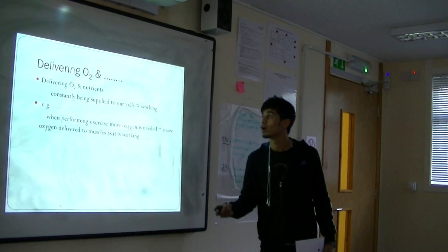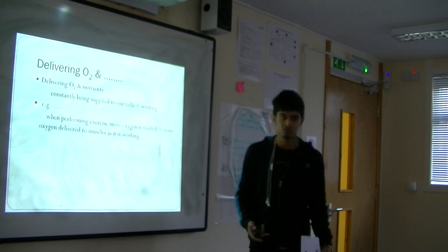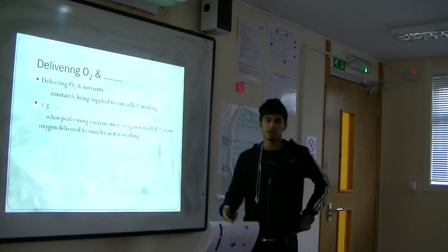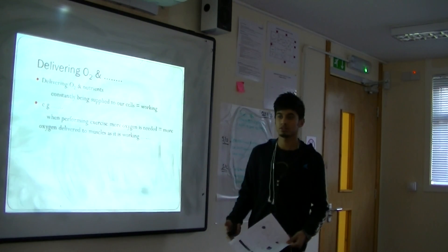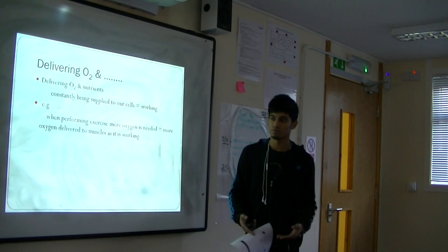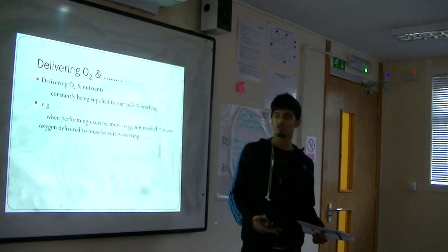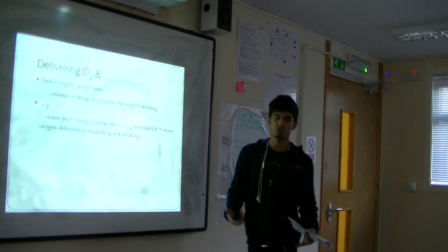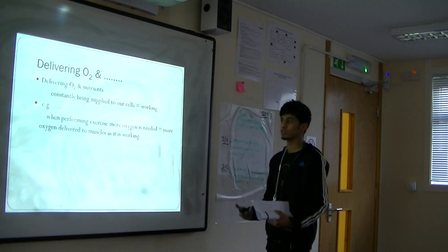Delivering O2 and nutrients: oxygen is constantly supplied to our body, which allows our cells to keep working. If our cells have more oxygen, we can perform at better rates. For example, a long-distance runner needs more oxygen, so the more oxygen and nutrients delivered to the muscles, the longer and better they perform.